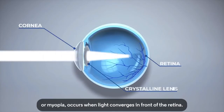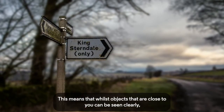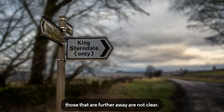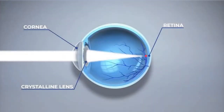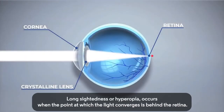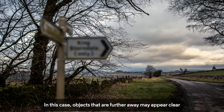Short-sightedness, or myopia, occurs when light converges in front of the retina. This means that whilst objects that are close to you can be seen clearly, those that are further away are not clear.